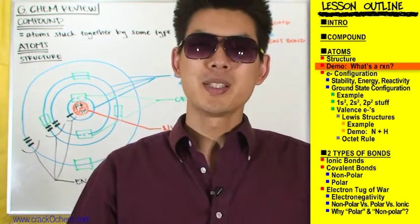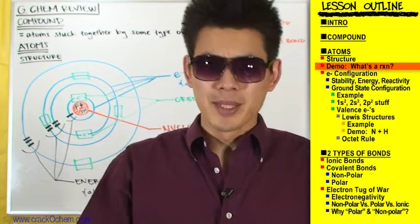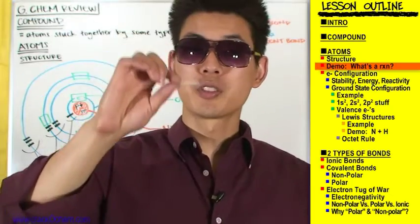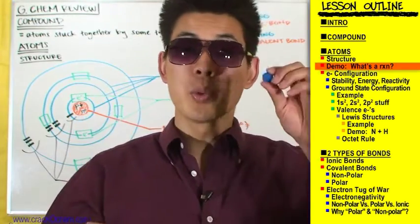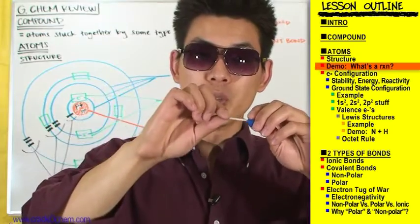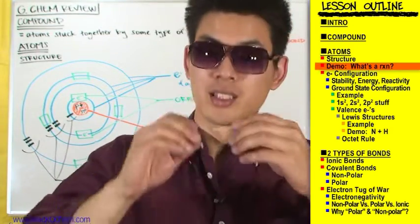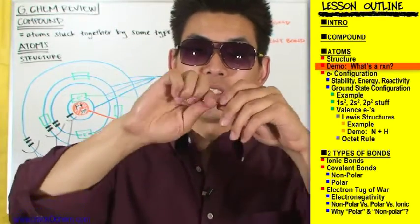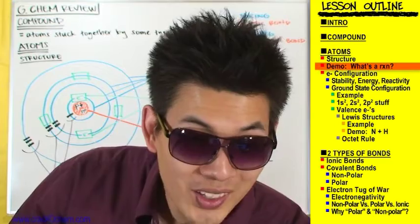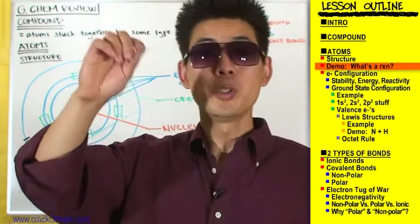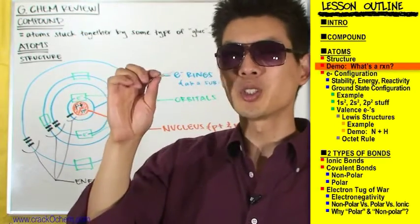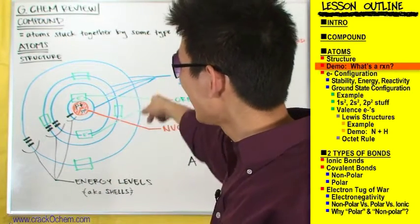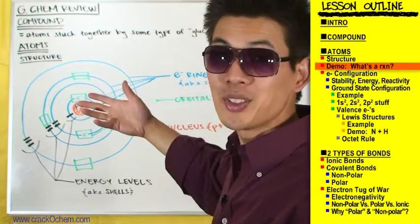One misconception from that demo: the way I presented it made it look like the electrons were just floating around in midair, and then floated down between the atoms to make a bond, or floated away to break it. That's not how it works. Electrons aren't floating around randomly in the air — they're located as part of atoms, with protons and neutrons on the inside and electrons revolving around the outside.